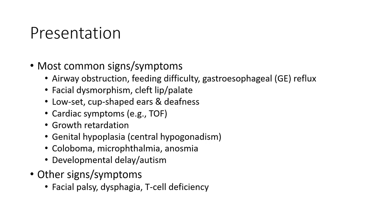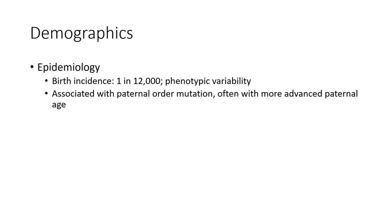Other signs and symptoms include association with T-cell deficiency. Epidemiology: Birth incidence is 1 in 12,000, with phenotypic variability. Also associated with CHD7 gene mutation, often with more than one CHD7 allele affected.